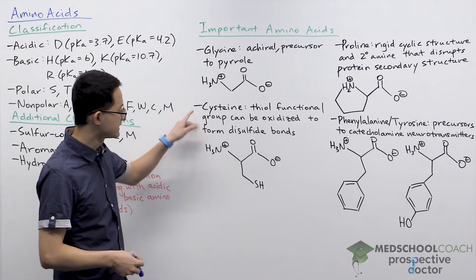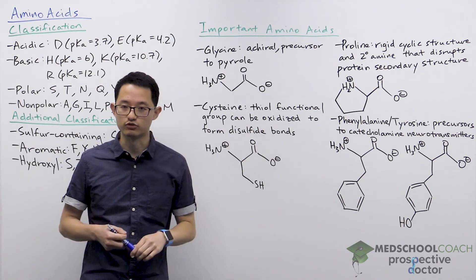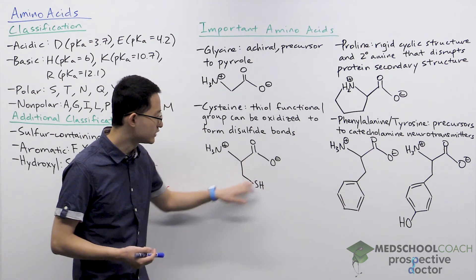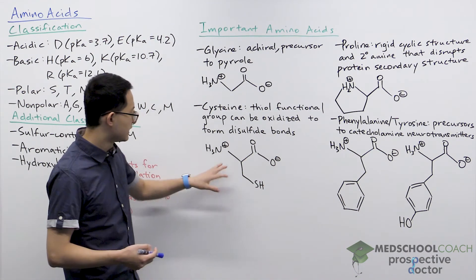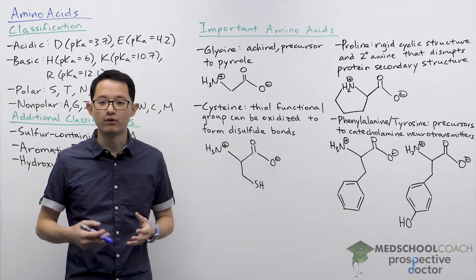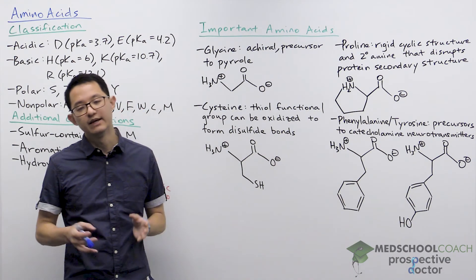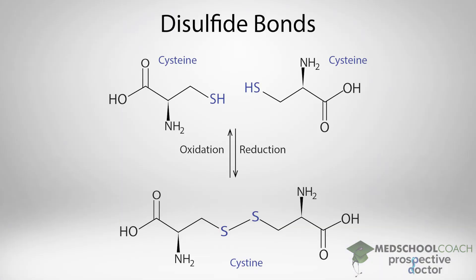The next important amino acid is cysteine. Cysteine is important because it has a thiol functional group (the SH group). This is important because the thiol functional group can be oxidized to form disulfide bonds. As shown in this diagram, two cysteine residues with thiol groups can be oxidized to form a disulfide bond. Note that "cysteine" (E-I) refers to the individual amino acid, while the dimer formed when two cysteines form a disulfide bond is called "cystine" (with an I instead of E-I).